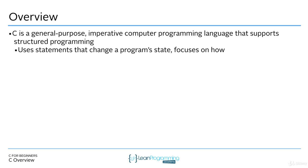Some programming languages are very application specific or domain specific. For example, a programming language like COBOL you can really only use to write business applications. A programming language like MATLAB you can only write certain applications. C, you can write operating system applications, you can write general programs — all sorts of different types.